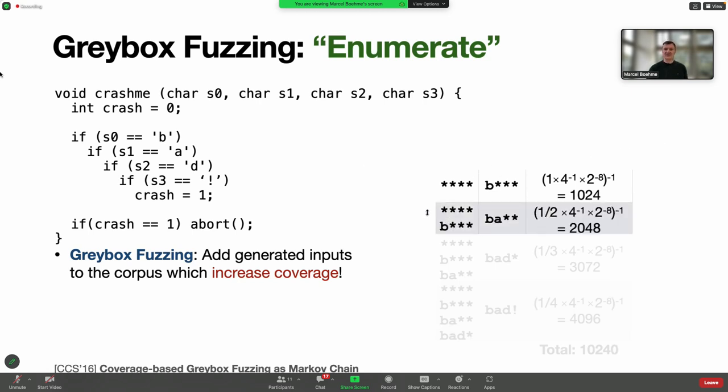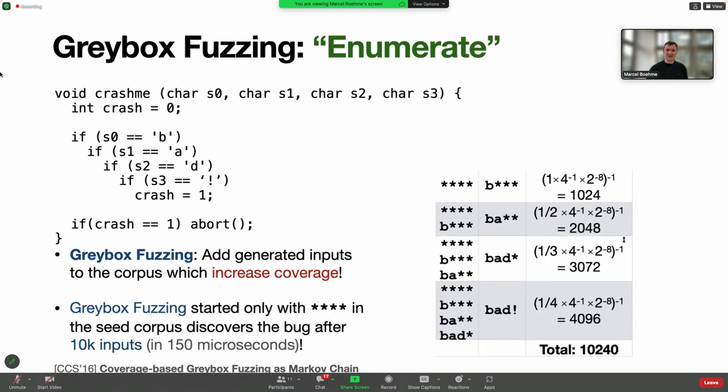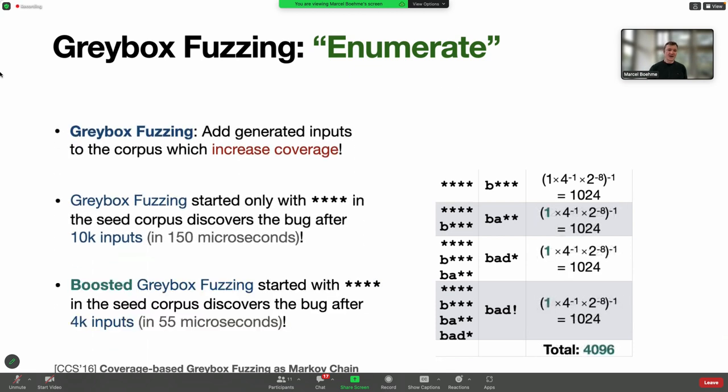We add it to the corpus, then select the next seed uniformly at random, and the probability we chose this seed, this character, and generate A as the value requires about 2,000 inputs. We go on like that, and easily, starting from a random input, we can find a bug using only 10,000 inputs. On my machine this takes 150 microseconds. This is much faster than symbolic execution which requires constraint solving and encoding for three inputs. In the work we presented at CCS 2016, we boosted gray box fuzzing by choosing the seed which exercises the lowest probability domain, going down to 4,000 inputs and 55 microseconds.